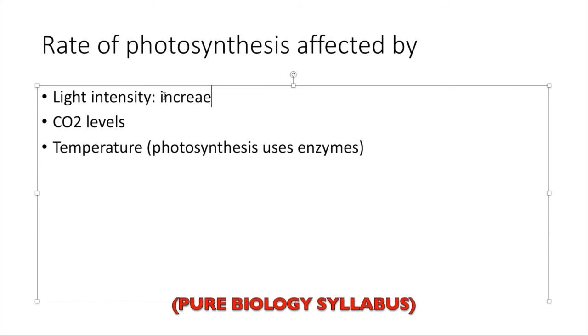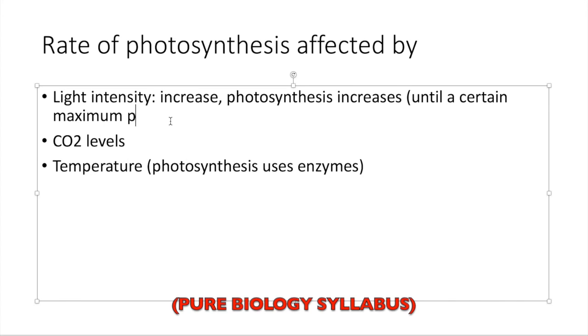A rule of thumb is the greater the light intensity, the higher the rate of photosynthesis, because more light energy is being given to the plant. Do note there will be a maximum level of light absorption that the plant can take because the amount of chlorophyll is limited.